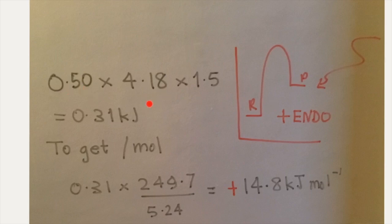Here, the enthalpy change for 5.24 grams being dissolved in water comes to 0.31 kilojoules. And when we solve for the value per mole, we divide 249.7 the molar mass of hydrated copper sulfate by 5.24 and we multiply by 0.31. This comes to an answer of 14.8 kilojoules per mole.